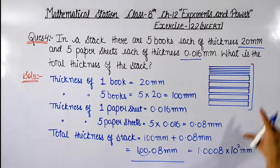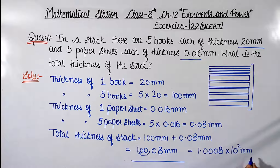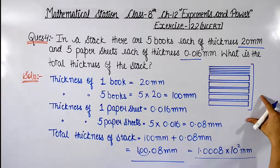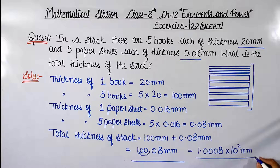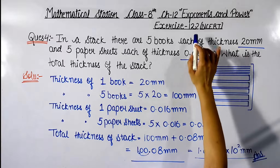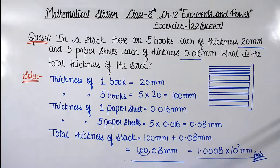So 1.0008 multiplied by 10 to the power of 2 mm is the total thickness of this stack. This is the answer in standard form. With this, we complete question number 4, which is the last question of exercise 12.2.